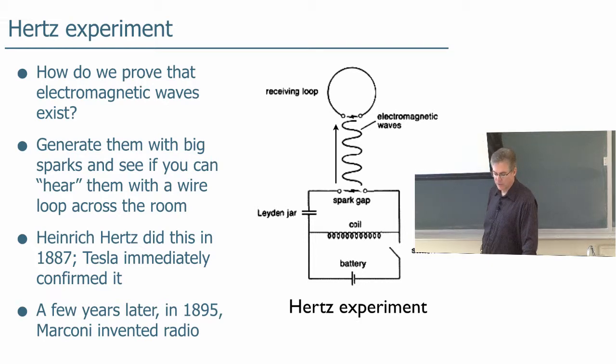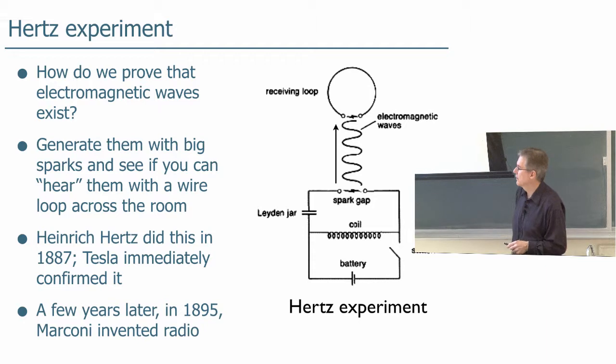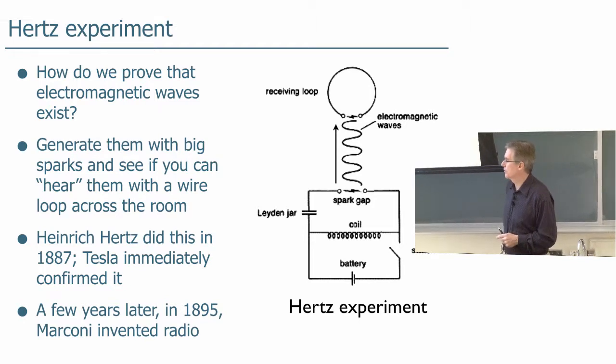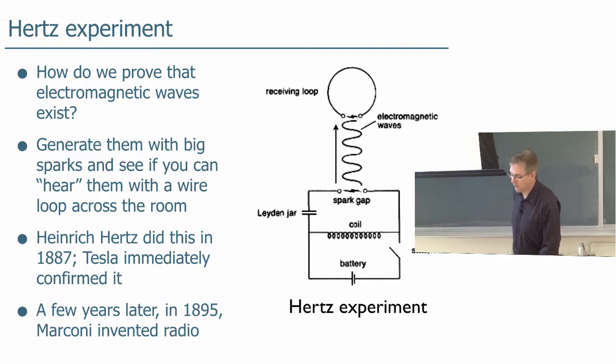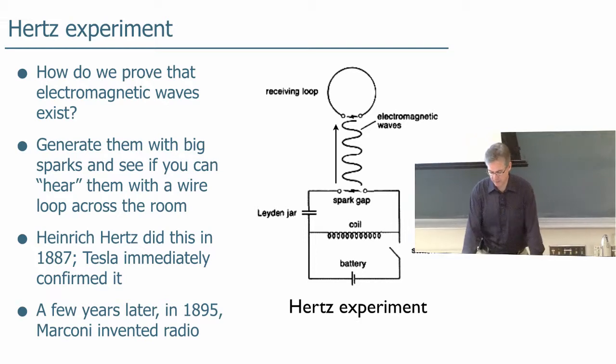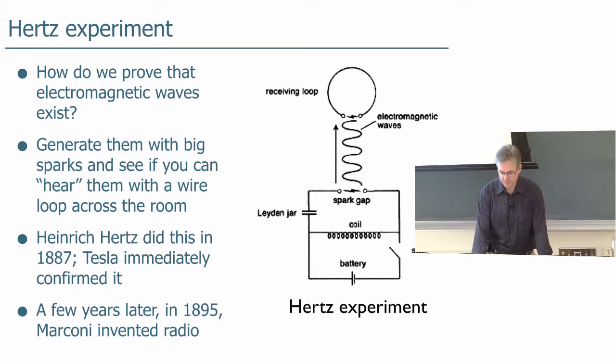So that was done in 1887 and Tesla immediately confirmed it. And of course, people got very interested in sending messages across large distances using this. And in 1895, Marconi invented a practical radio system that could be used to send Morse code over long distances. So it spread like wildfire and within just a few years there was broadcast radio in the United States, like by about 1910 or so. Amazing technological development.